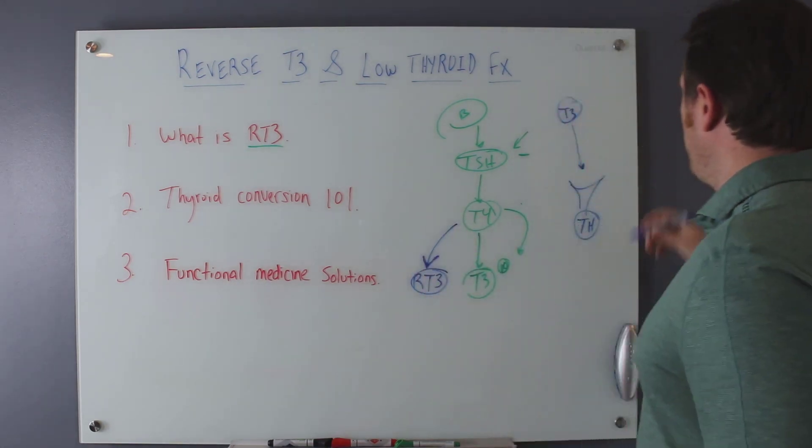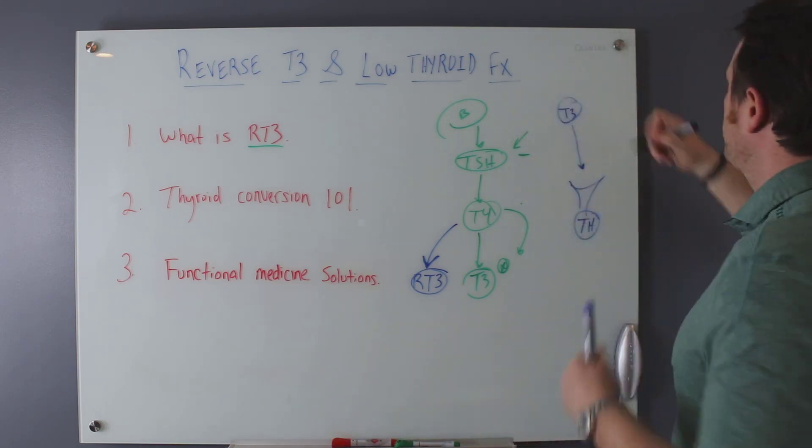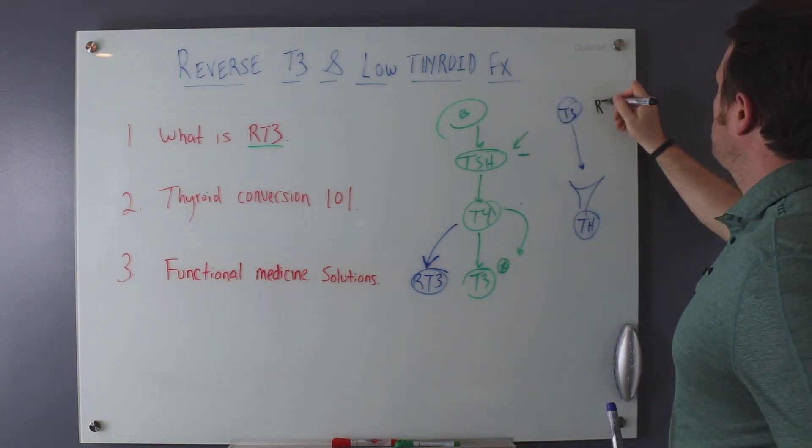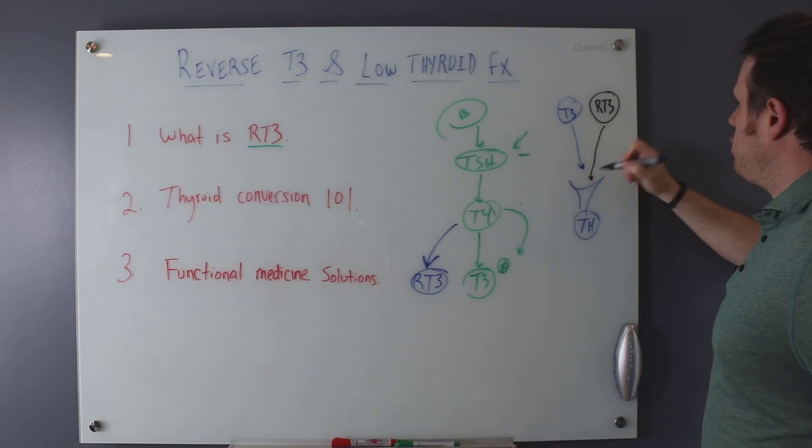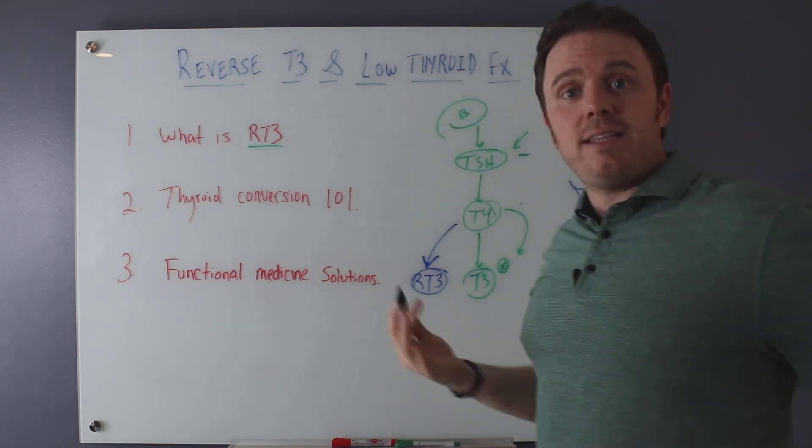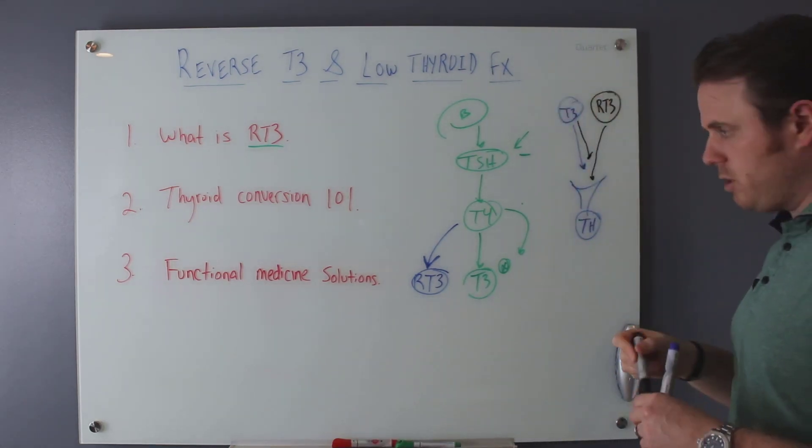Now what happens is we have reverse T3 over here. Okay. And this reverse T3 essentially comes in there, hits the receptor site and blocks it. So when this guy tries to come in, it's not able to do so. So that's kind of what's happening here from a receptor site, kind of lock and key methodology.